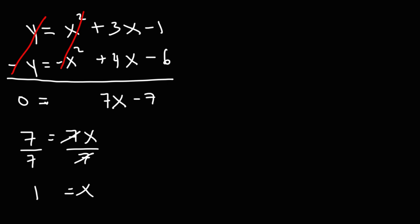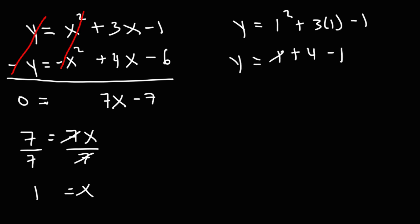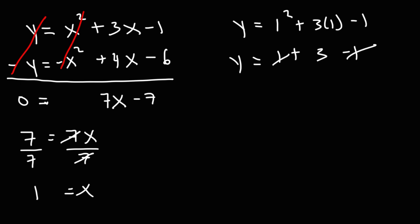Dividing both sides by 7, we get x is equal to 1. We can plug 1 into the first equation: 1 squared plus 3 times 1 minus 1. That's 1 plus 3 minus 1. 3 times 1 is 3, so we get y is equal to 3. Thus the answer is (1, 3).